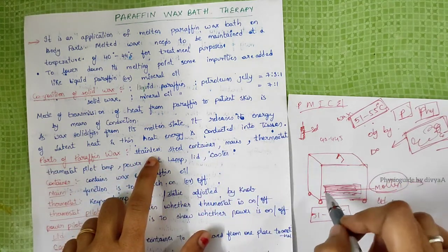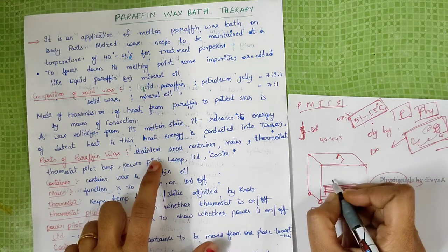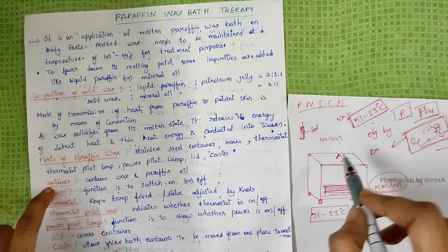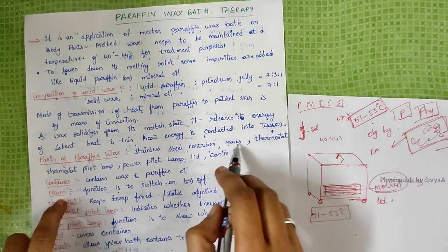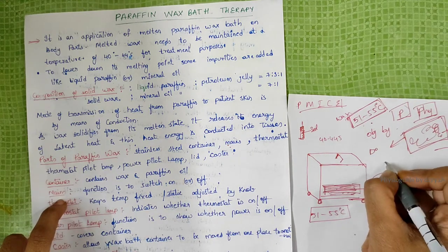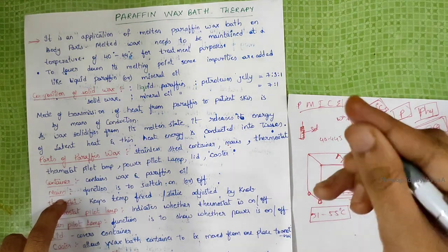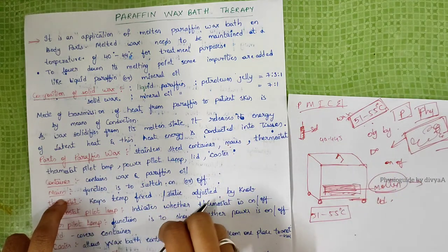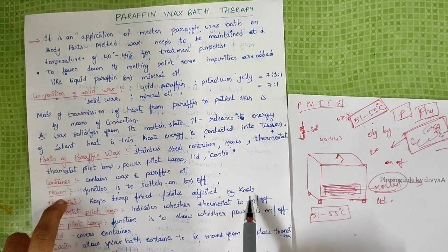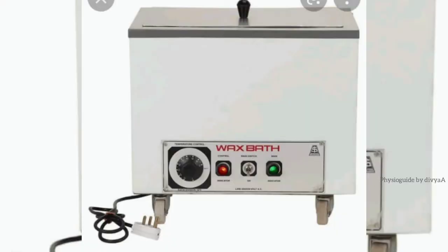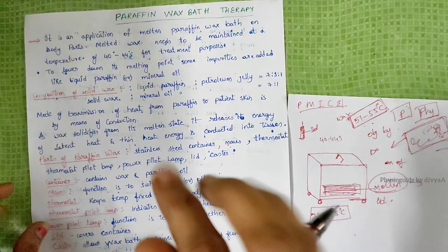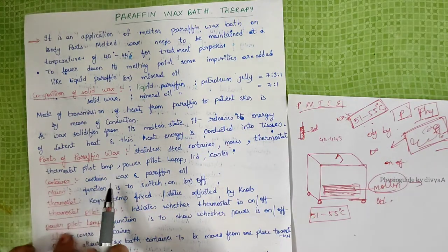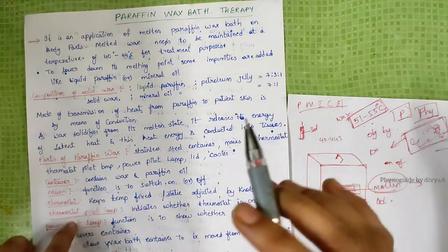Parts of paraffin wax bath: stainless steel container outside, which contains wax and paraffin oil inside. Switch to turn on and off the device. Thermostat keeps temperature fixed and is adjusted by knob. Pilot lamp indicates whether it is on or off.